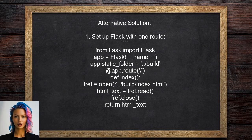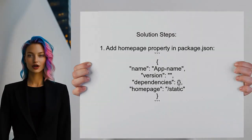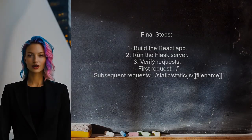Another solution involves setting up a Flask server with a single route to serve the index.html file from the Create React App build folder. They configure the static folder to point to the build directory and read the index.html file directly. However, they encountered an issue with static files not being served correctly due to path mismatches. To resolve this, they added a homepage property in the package.json file, setting it to slash static. This ensures correct paths are used during the build process, so after building the React app and running the Flask server, the initial GET request serves the index.html file followed by correctly routed requests for static assets.